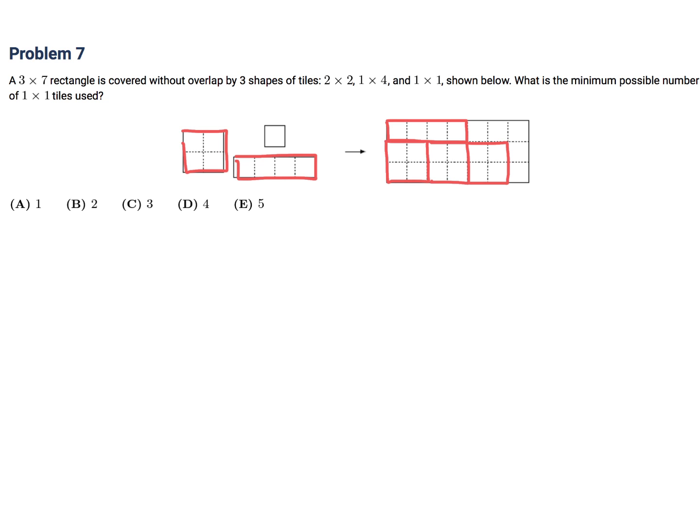So now I'm only left with the 1 by 1. And now I've got to put one here, two here, three, and then four, and then five. So we have to put five. And I think that's it. I think there's any way, I mean, you can try to see if you can make it less, but when you fiddle around, you'll see that the minimum number of the 1 by 1 tiles that can be used is five.